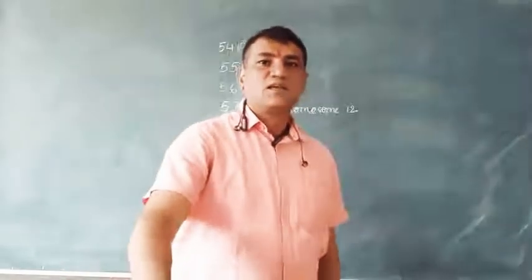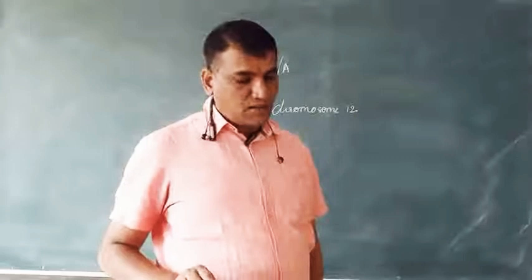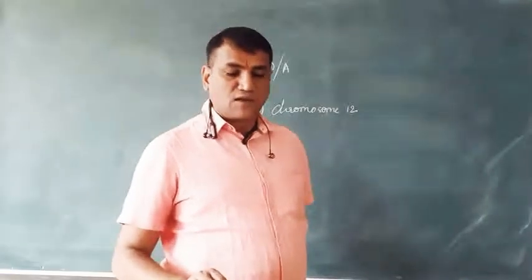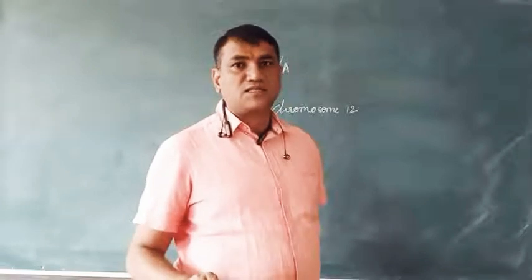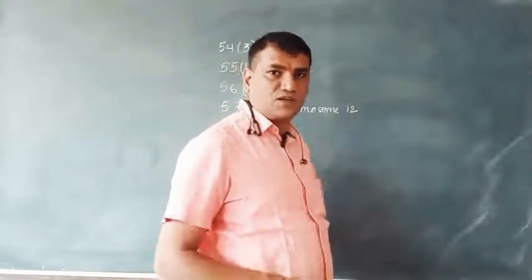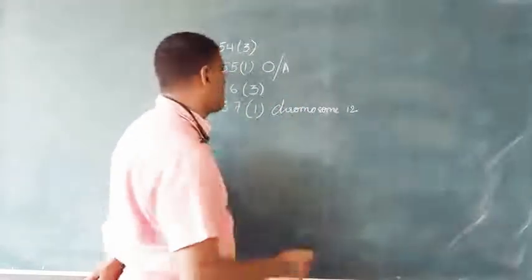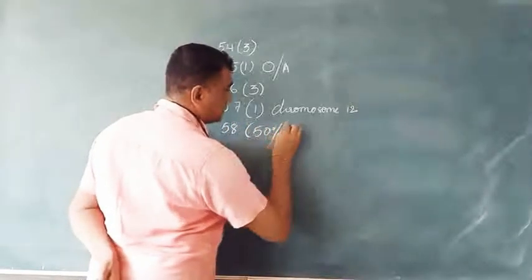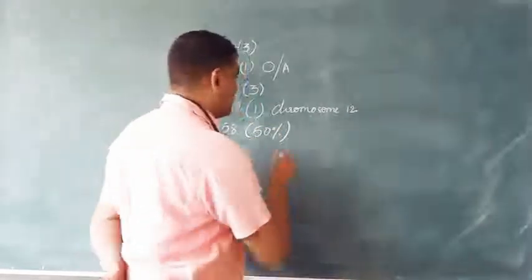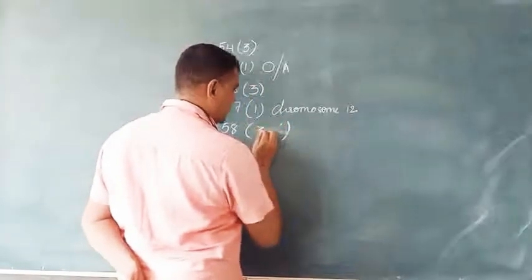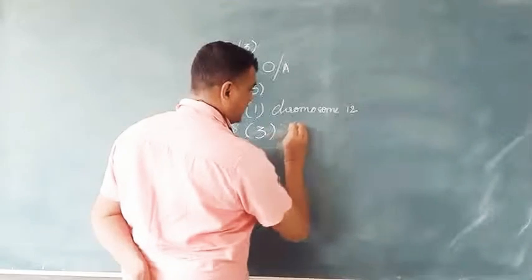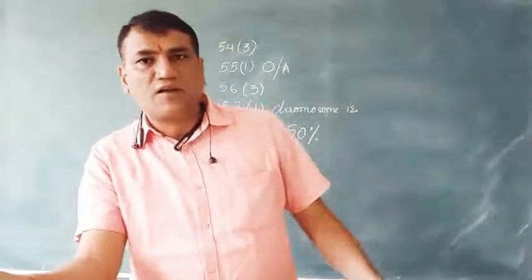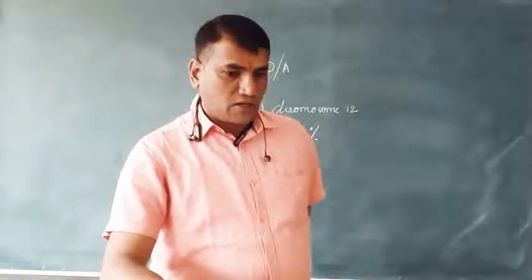Question 58: A girl who has dimples and is heterozygous for the trait marries a boy without dimples. The boy is not heterozygous — he is recessive. So 50% of the genes will be transferred. The probability that their first child will have dimples is 50%. Answer: option 3.